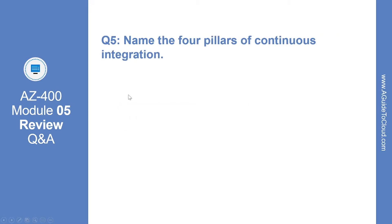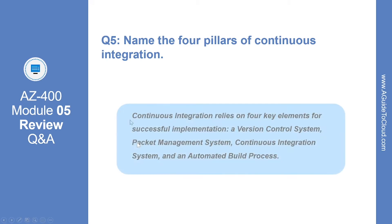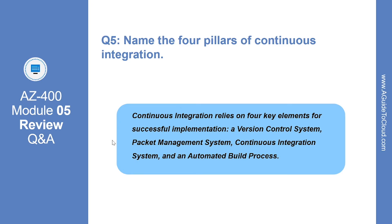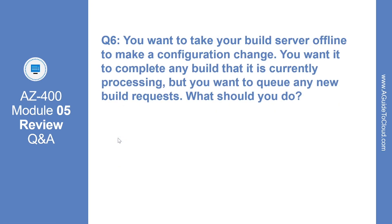Question number five: Name the four pillars of continuous integration. The correct answer is a version control system, a package management system, a continuous integration system, and an automated build process.